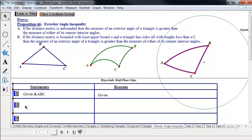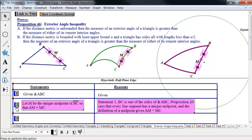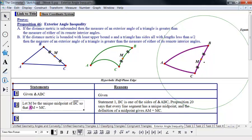So every line segment has a unique midpoint in all these geometries, that's given to us by proposition 20, so we're going to create that midpoint, and of course that means that the distance from BM is the same as the distance from MC.